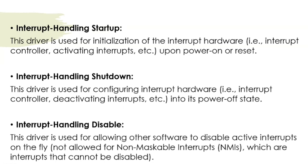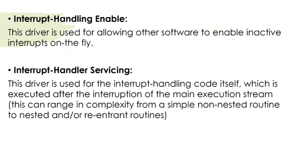Now let us see some examples of device drivers for interrupt handling. First, interrupt handling startup: when the system is powered on, the interrupt handling mechanism is also turned on, and that is done with this device driver. Interrupt handling shutdown: the reverse — when the system shuts down, interrupt handling is also shut down. Interrupt handling disable: disables interrupt handling for a particular period, such as during a critical condition or when processing a non-maskable interrupt. Interrupt handling enable: enables interrupt handling. Interrupt handler servicing: used for servicing a particular interrupt service routine.